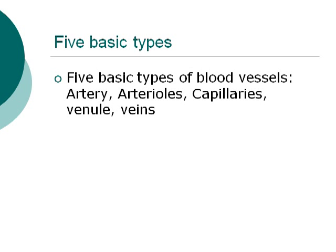First of all, let's look at the five basic types of blood vessels. These five basic types are found all over your body: the artery, the arterioles, the capillaries, the venule, and the veins.